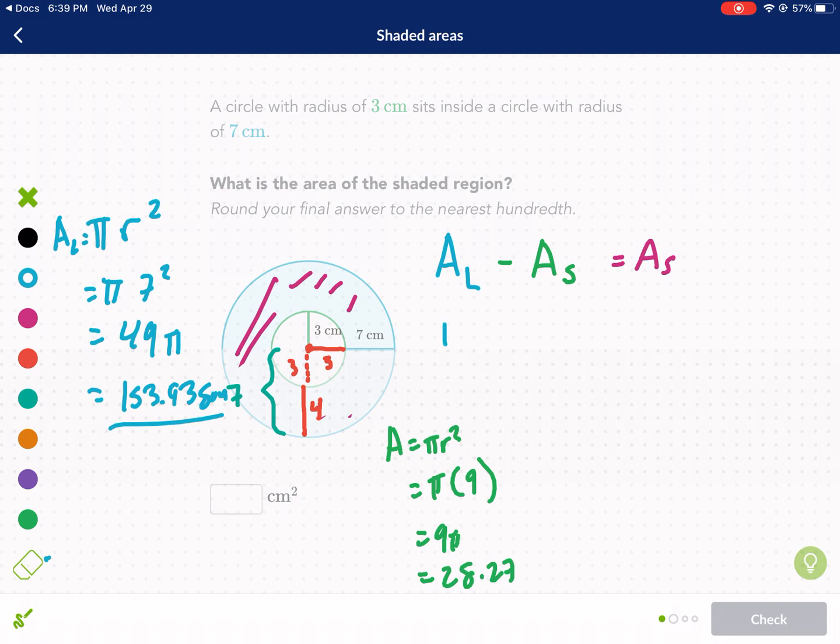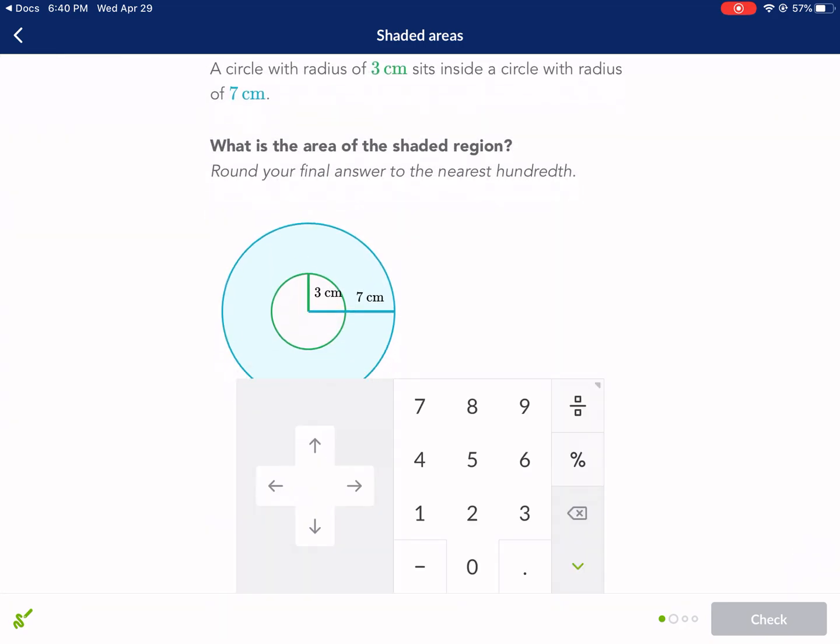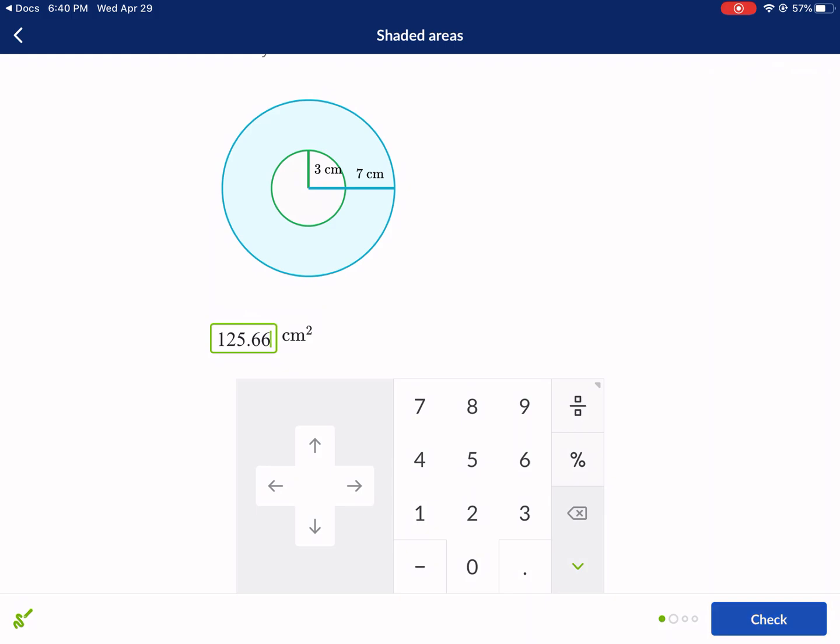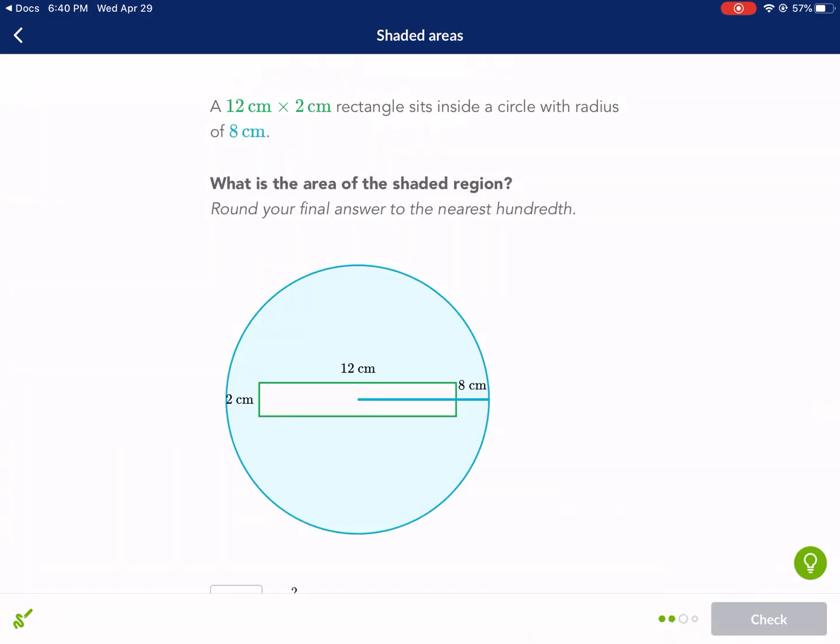I keep these stored because now I'm going to take 153 minus 28 equals my area. So I do 153 minus 28. And then I get my answer, which is 125.663. I'm rounding to the nearest hundredth right here. The number after the six is three, so we keep it. So it's 125.66. All right. We're doing great.